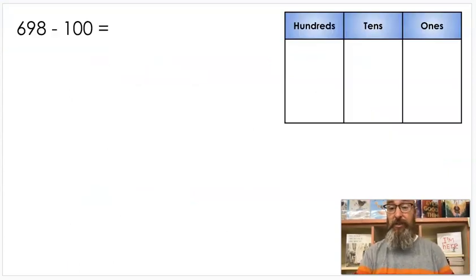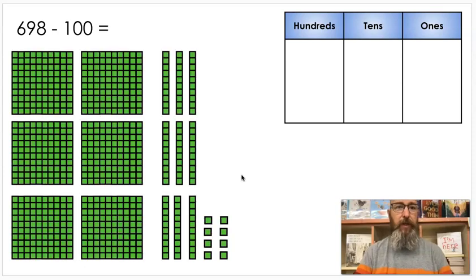This lesson focuses on subtracting tens and hundreds. I'm going to use place value blocks and a place value chart both to show why this works and why you can do it in your head. So if I have 698, if I use blocks I have 6 hundreds, 9 tens makes 90, 8 singles makes 8. And then over here I have 698: 6 hundreds, 9 tens, 8 ones.